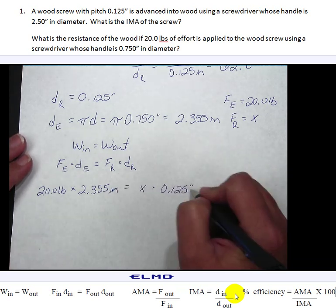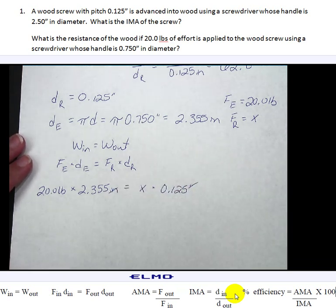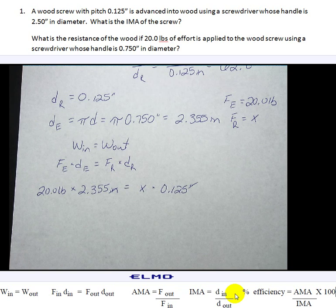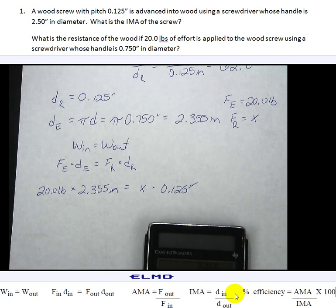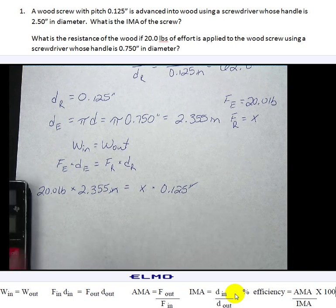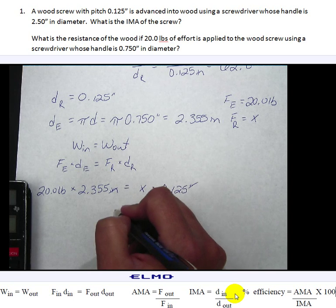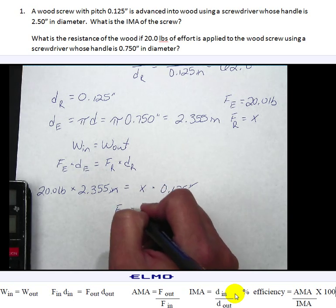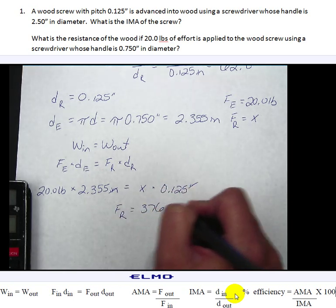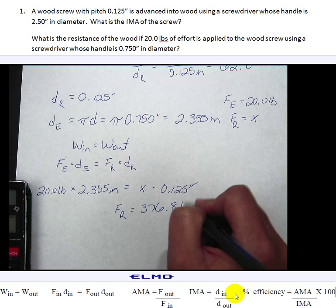My inches will end up canceling out when I bring this over leaving me with pounds. But I'm going to multiply 20 times 2.355 and then I'll divide it by 0.125. So my force resistance is equal to 376.8 pounds.